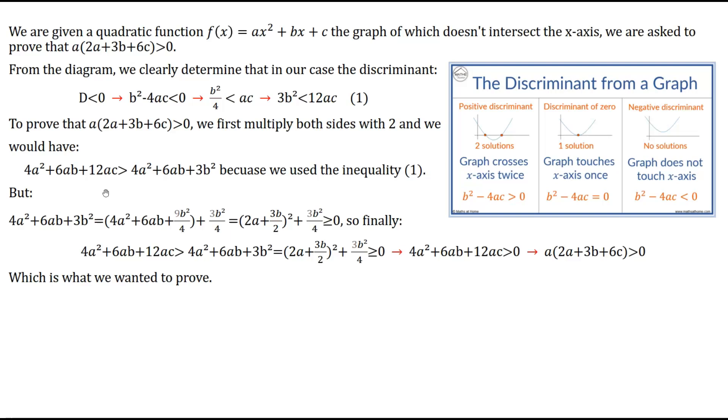In this case, it is greater than 4a² (the same factor) plus 6ab (the same factor) plus 3b² because we determined in inequality 1 that 12ac > 3b². So the left hand side is greater than the right hand side because we use inequality number one.